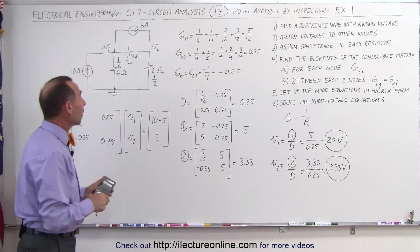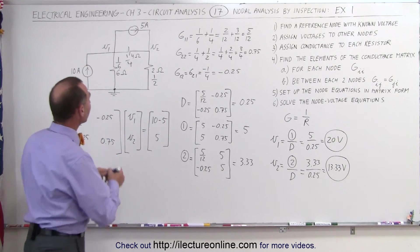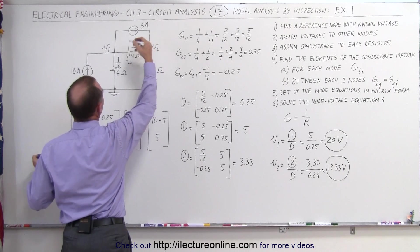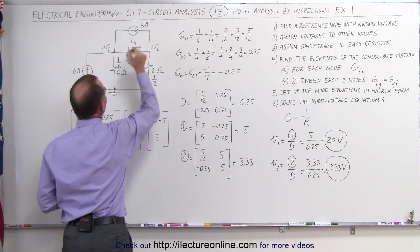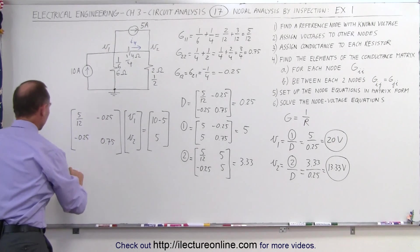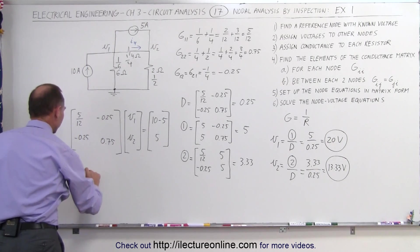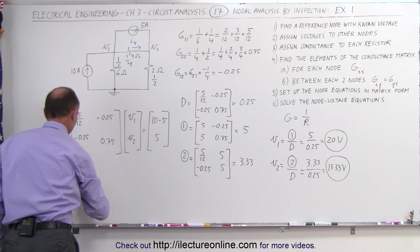At that point, if you want to find the currents in each of the branches, that's fairly easy to do. For example, let's say you want to find the current through here, and I'll just call that current I4. We want to find I4. You can say that I4 would be equal to the voltage difference between the two nodes divided by the resistance of 4 ohms.